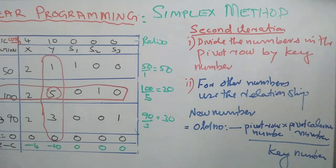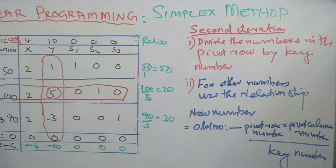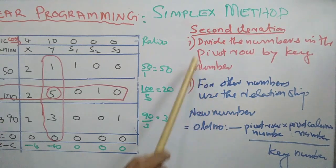Then we find Z, then we go for Z minus C. If all Z minus C values are positive, then the solution is optimum. Otherwise we need a third iteration.